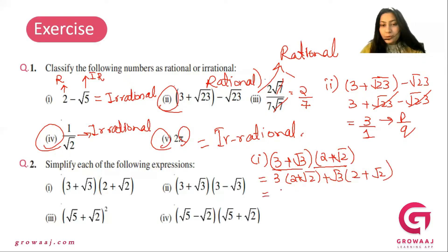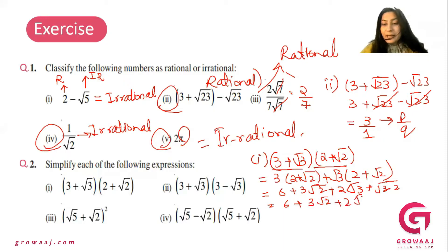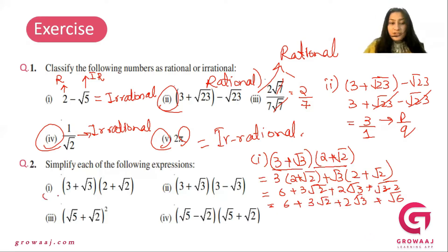So 3 times 2 is 6, then 3 times square root of 2 gives 3 square root of 2. Then square root of 3 times 2 gives 2 square root of 3, and square root of 3 times square root of 2 gives square root of 6. Since the radical terms are different we cannot add them, so the answer is 6 plus 3 square root of 2 plus 2 square root of 3 plus square root of 6.